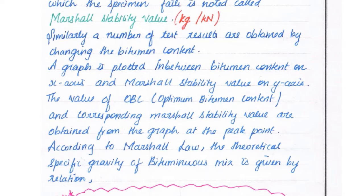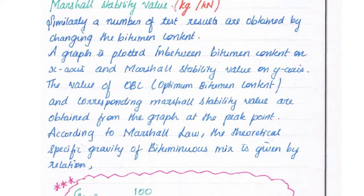Simultaneously, a number of test results are obtained by changing the bitumen content. The graph is plotted between bitumen content on x-axis and Marshall Stability Value on y-axis. The value of OBC (Optimum Bitumen Content) and corresponding Marshall Stability Value are obtained from the graph at peak point.